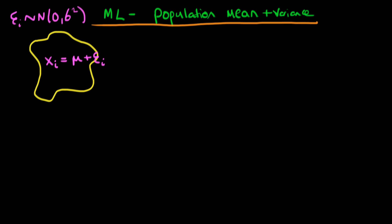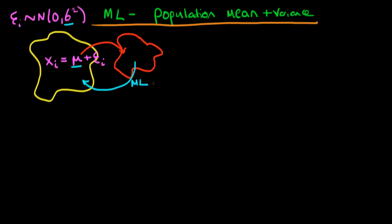In general we don't have the entirety of the population data — we only have a subsample. In estimation theory and in maximum likelihood, we want to come up with estimators for the population parameters μ and σ². In this video I'm going to talk about how we can use maximum likelihood to come up with estimators for the population mean μ and the population variance σ².